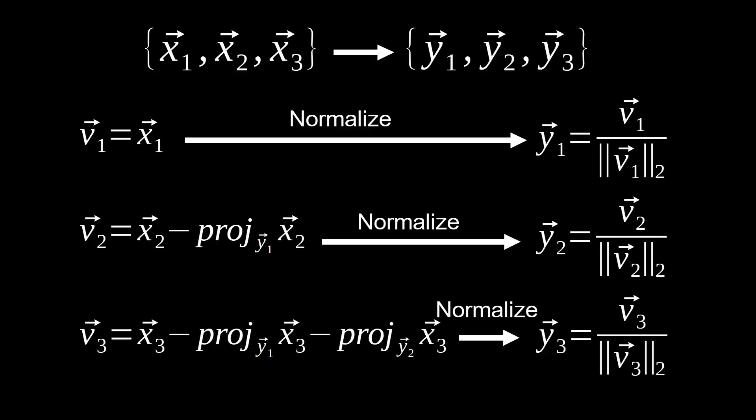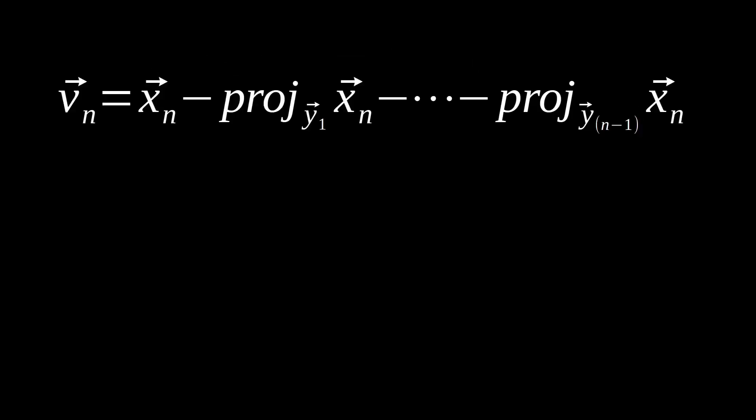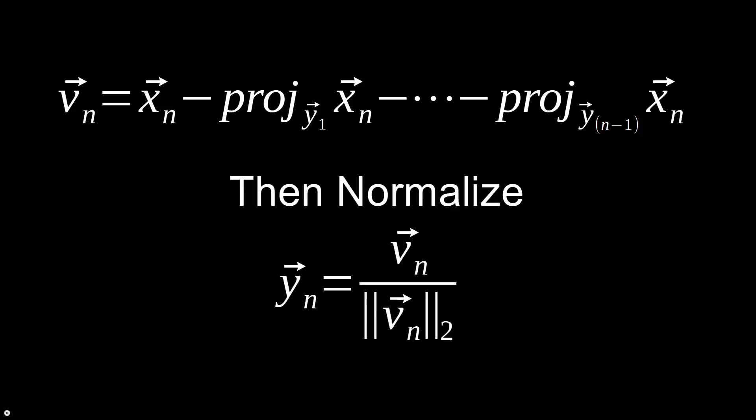More generally, once we get past establishing the first vector in our orthonormal set, we're just taking all these projections and subtracting them off of whatever vector we're currently on. So VN equals XN minus the projection of XN onto V1, XN onto V2, up to N minus 1. Then we normalize — take that V vector and divide by its two-norm — and that gives us the Y vector for our orthonormal set.